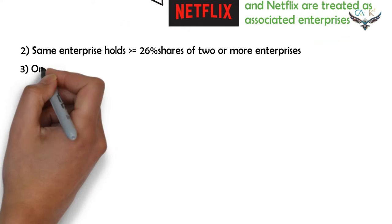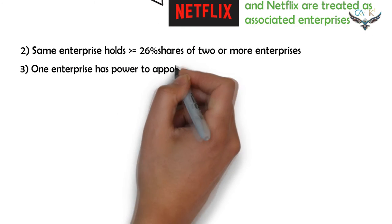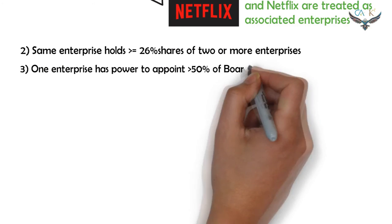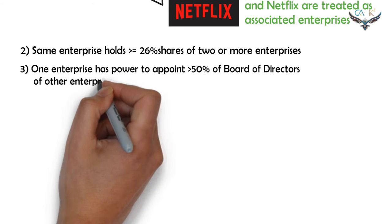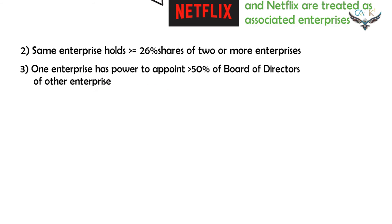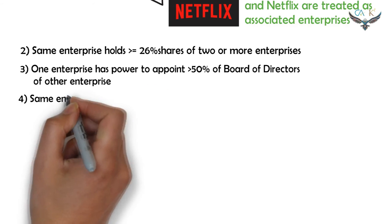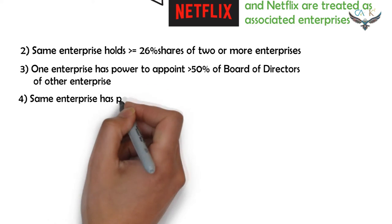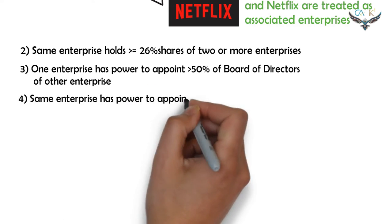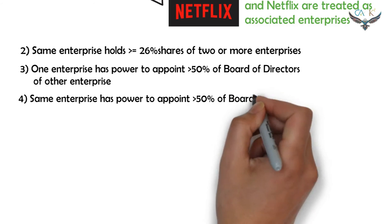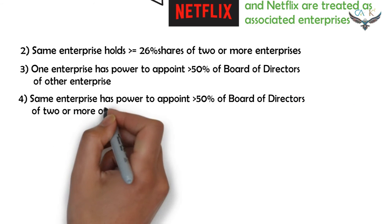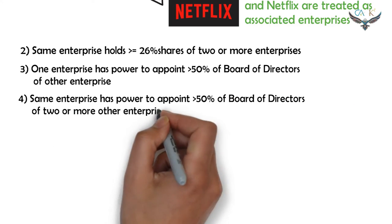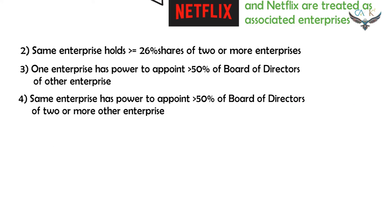The next criterion is: one enterprise has the power to appoint more than 50% of the board of directors of another enterprise. And similarly, a common enterprise has the power to appoint more than 50% of the board of directors of two or more other enterprises.